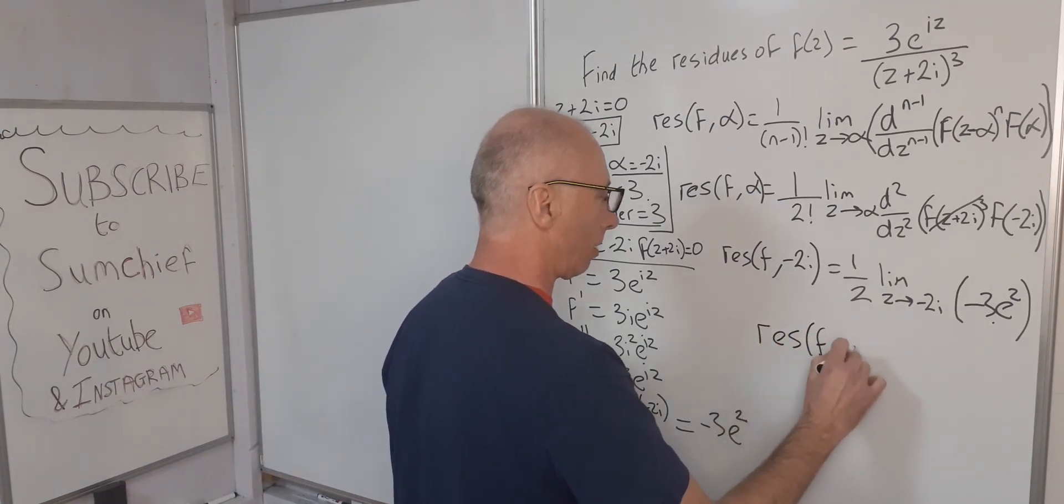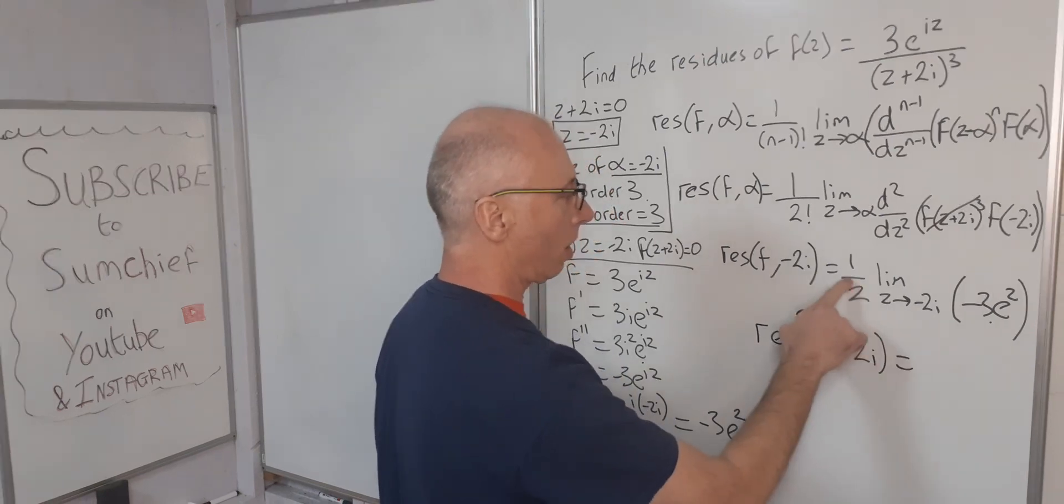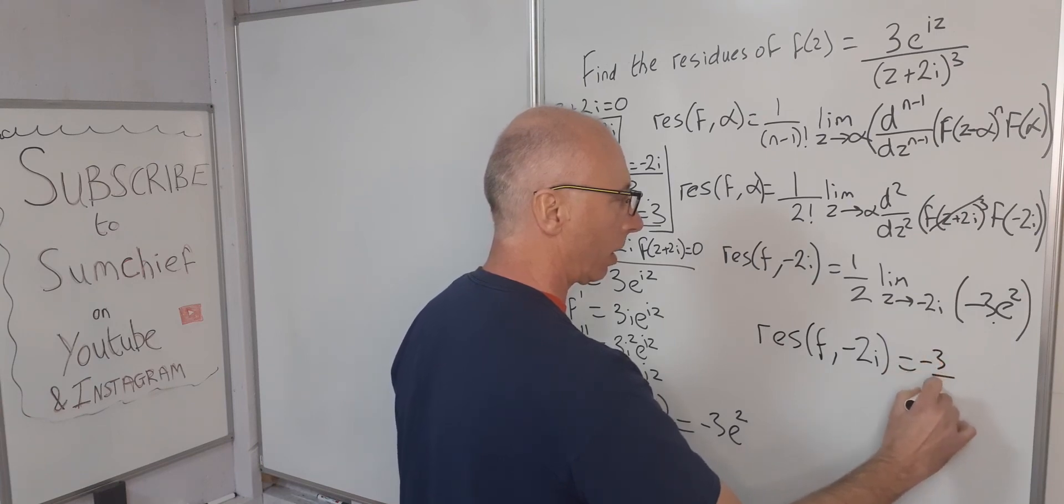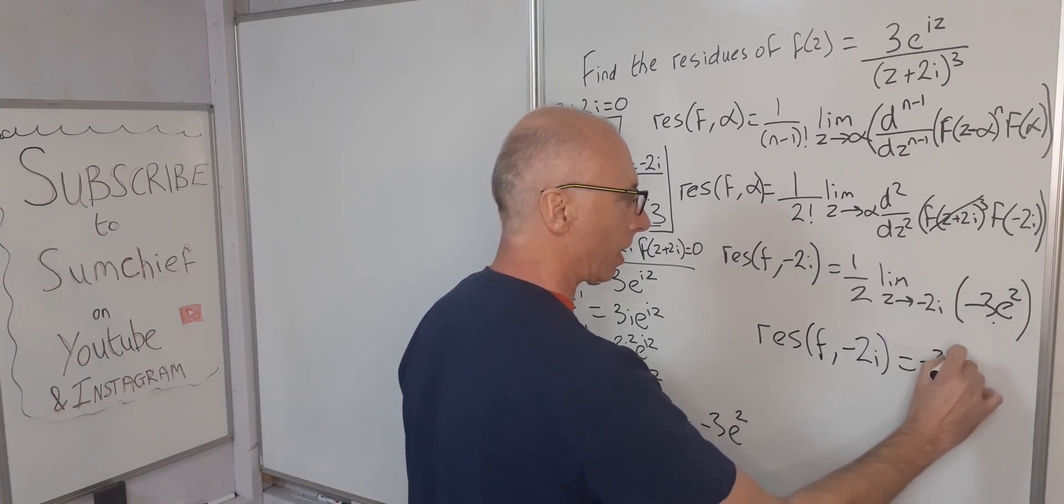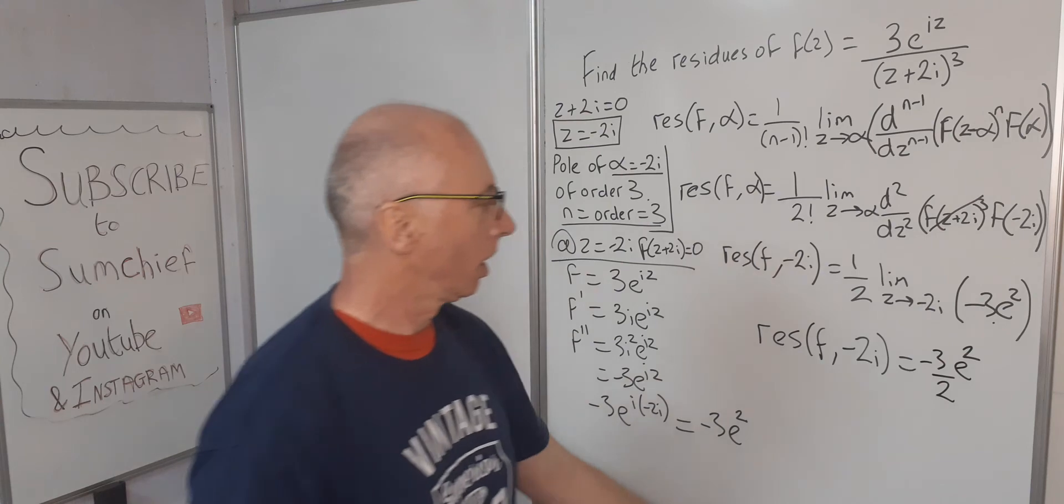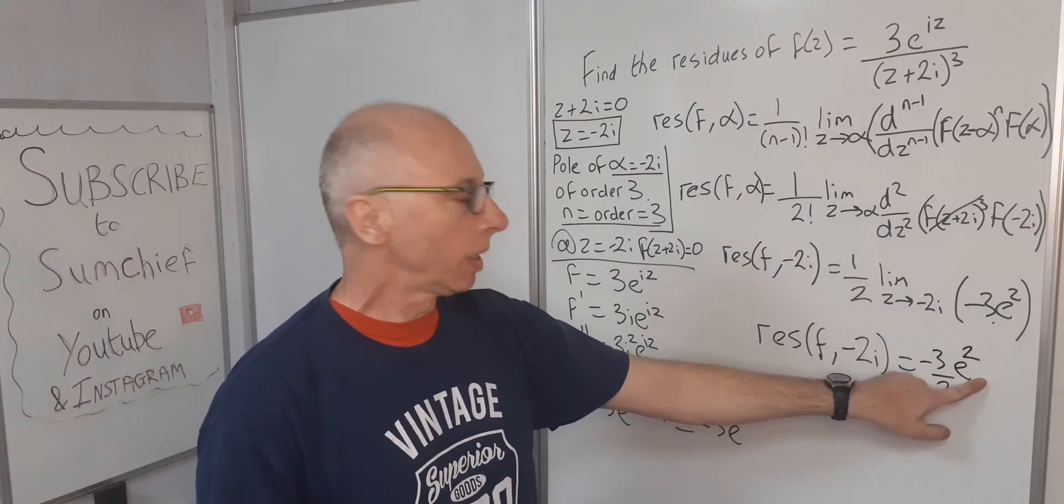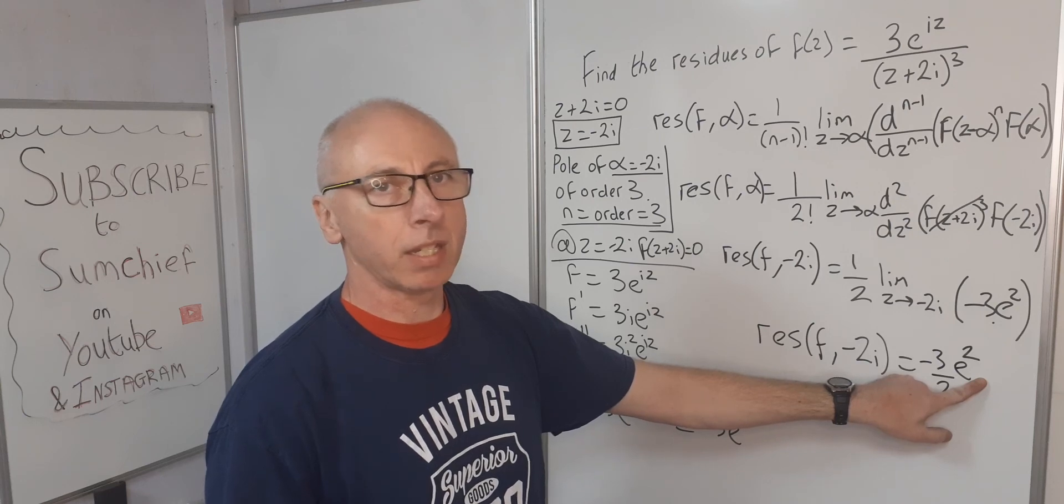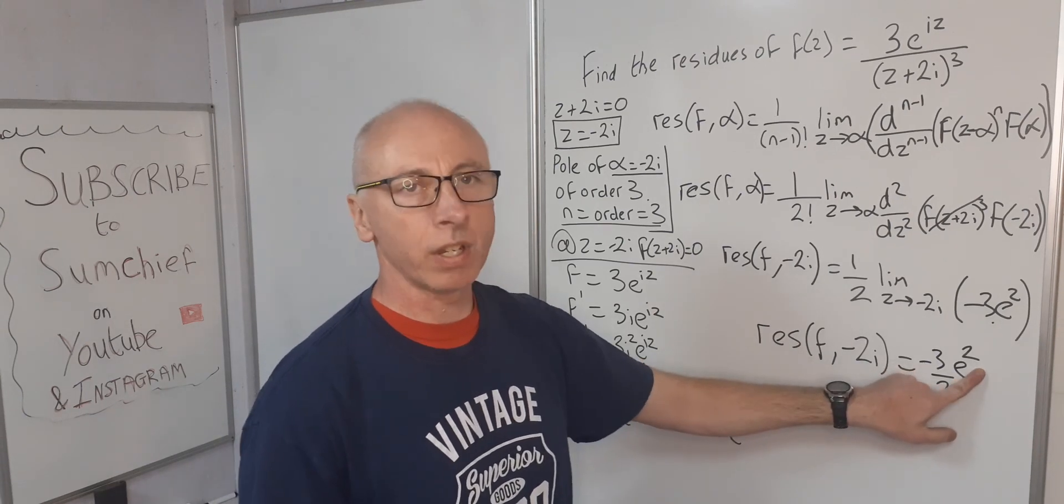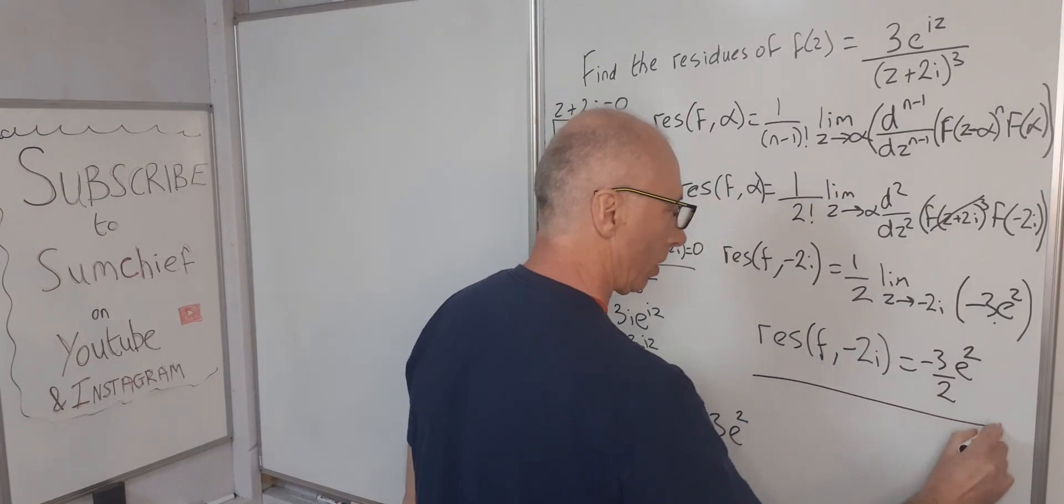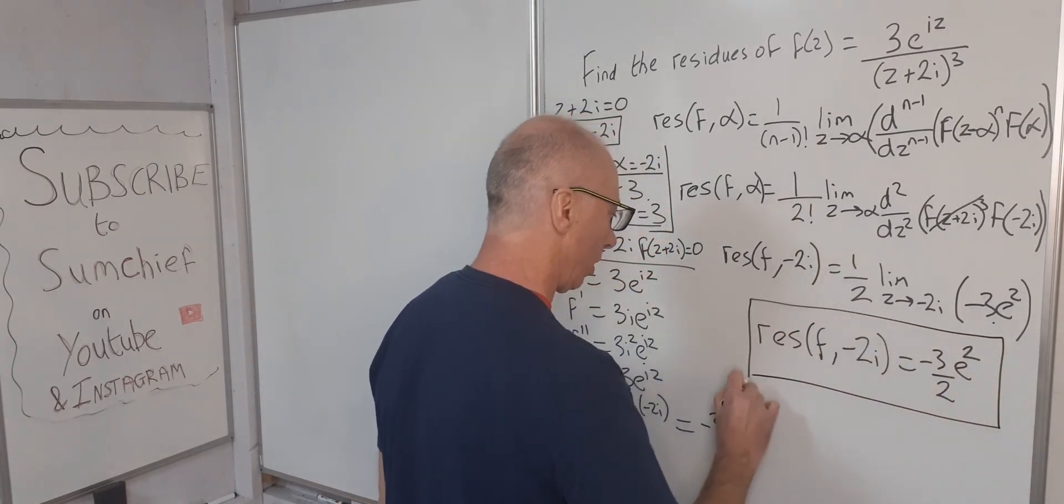So then we get the residue of f at -2i equals half times -3, which is basically -3/2, and then e². You could type e² into your calculator, you'll get a big long amount of decimal places for that. But just leave it as that. That gives it in its exact form. So that is going to give us our answer.